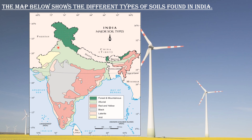I have discussed forest and mountainous soil, alluvial soil, red and yellow soil, black soil, laterite soil and arid soil. A map has been shared which you can refer to for map marking.